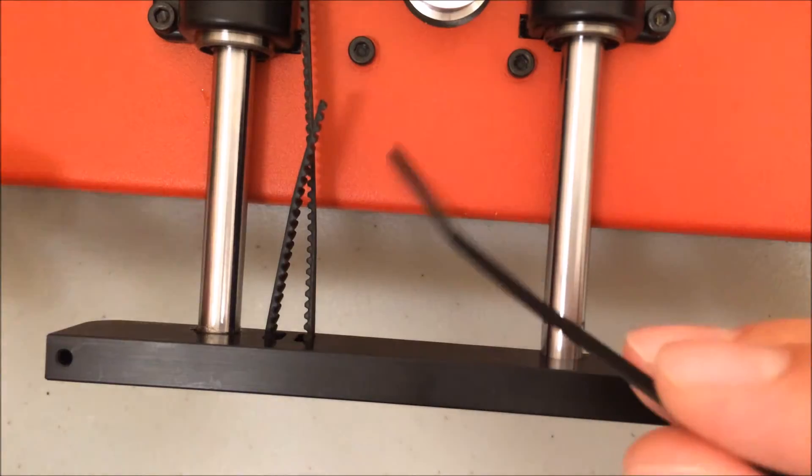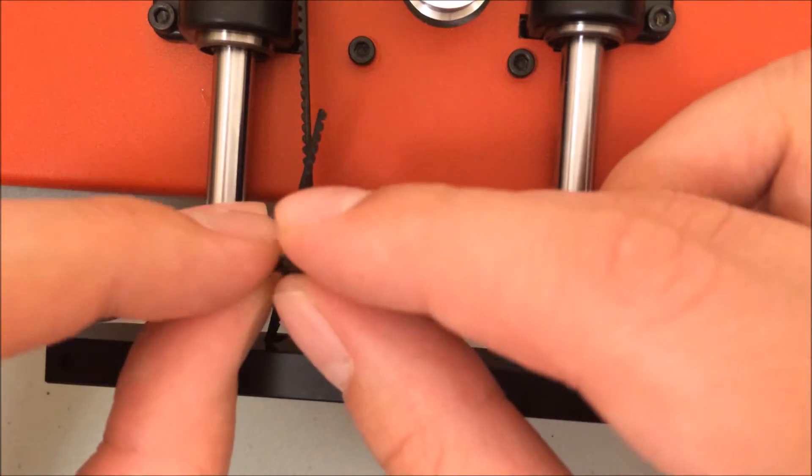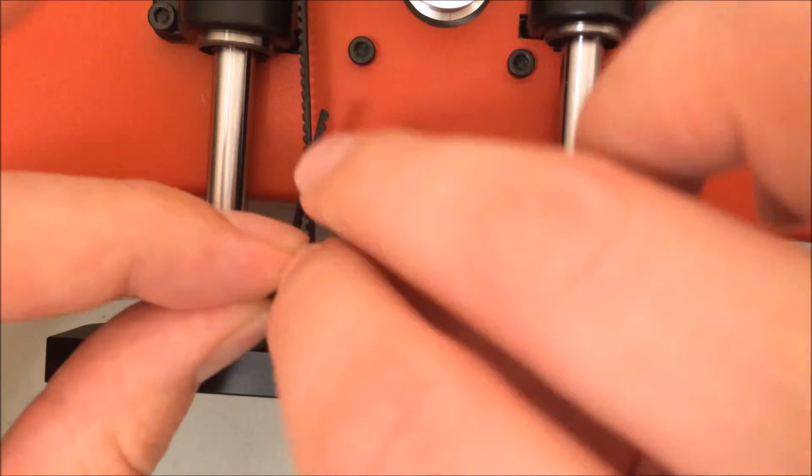Again, it doesn't matter if the block of the zip tie is on the right or left-hand side, just that it's on top. So I'm going to get my zip tie started, pull the slack, and then tighten it all the way.